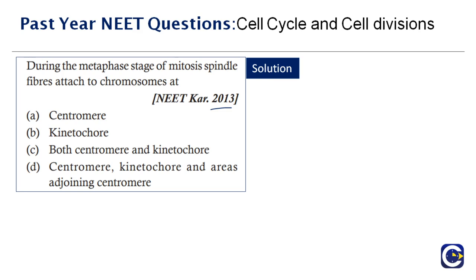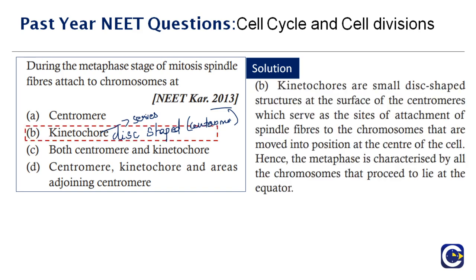Kinetochore is a small disc-shaped structure at the surface of the centromere. It serves as the site of attachment for spindle fibers. Always remember: kinetochore is a complex protein associated with the centromere, disc-shaped, and serves as spindle fiber attachment. The correct answer is option B, kinetochore.